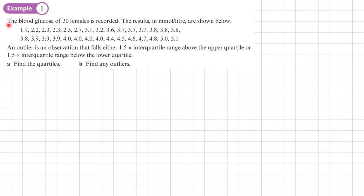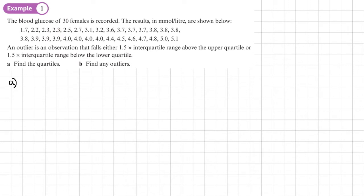Example 1. The blood glucose of 30 females is recorded. An outlier is an observation that falls either 1.5 times the interquartile range above the upper quartile, or 1.5 times the interquartile range below the lower quartile. We want to find the quartiles and then find any outliers. So 1.5 is the value of K, and since we have discrete data, we want to find the positions of the quartiles.